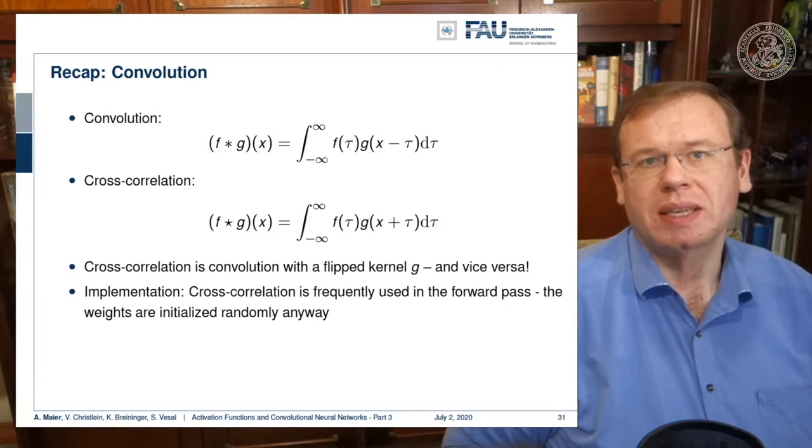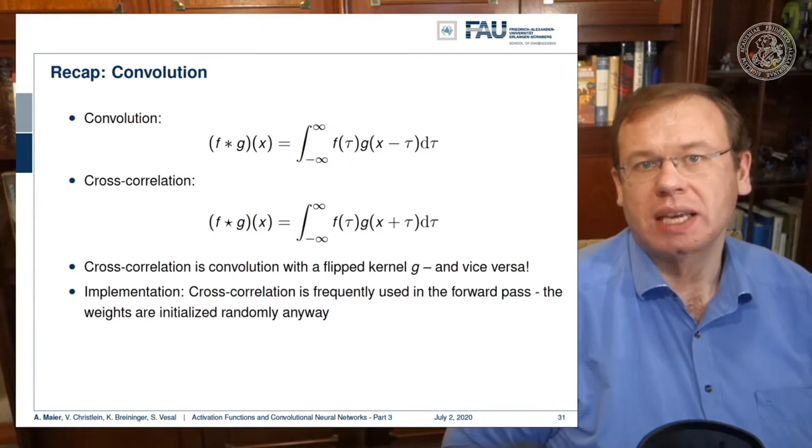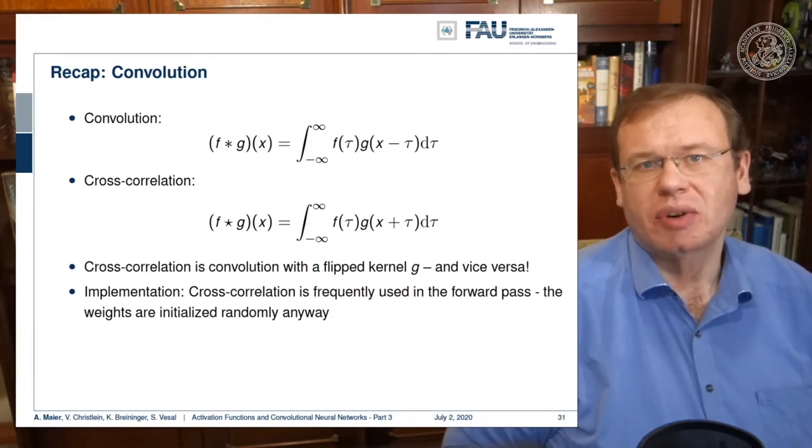Both implementations will be fine. Cross-correlation is actually frequently being implemented in actual deep learning software. Typically you initialize the weights randomly anyway, hence the difference has no effect.